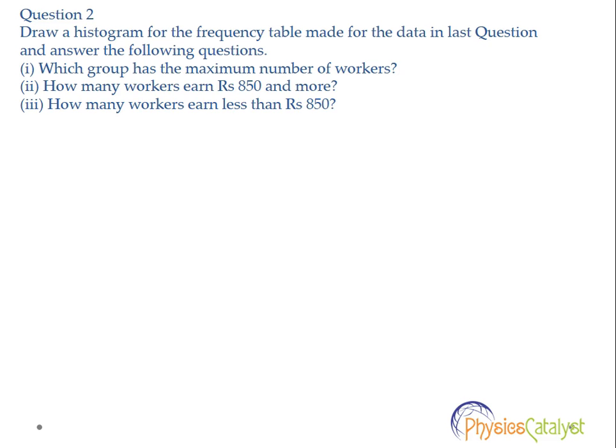Question number two: draw a histogram for the frequency distribution made for the data in the last question, and answer the following: part one — which group has the maximum number of workers? How many workers earn rupees 850 and more? How many workers earn less than rupees 850? We need to first draw the histogram and then answer these three parts. The answers can also be obtained from the table, but let's find them from the frequency distribution graph.